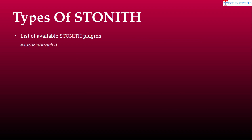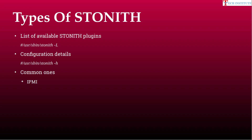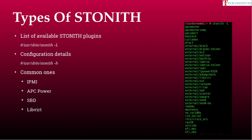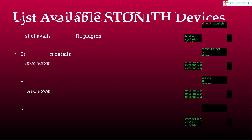If you want to list the available STONITH plugins, simply run the command 'stonith -L' and it will give you the list. For configuration details, use 'stonith -H' — the help section — which gives an overview of configuration options. Commonly used STONITH plugins include IPMI, APC power source, SBD, and libvirt. The example output shown is a snippet of 'stonith -L', not the entire output.